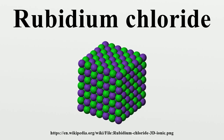Therefore, according to the radius ratio rule, cations in this polymorph will reach their largest apparent radius because the anion-cation distance is greatest.